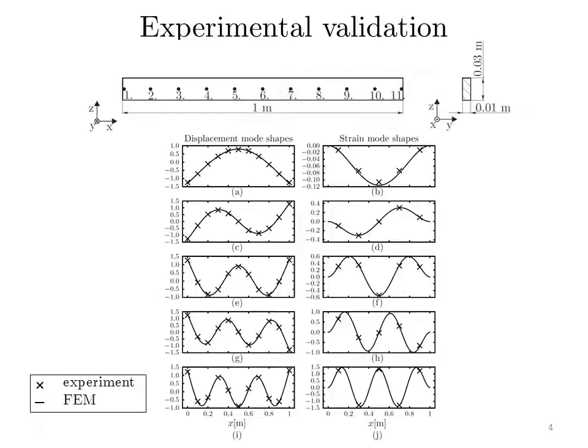The structure modification was performed by attaching magnets. For validation, the identified displacement and strain mode shapes are plotted together with the shapes calculated using the finite element method. Figures A, C, E, G, and I show the displacement mode shapes. Figures B, D, F, H, and J show the strain mode shapes. The comparison shows that the experimental results are in good agreement with the calculated values, which demonstrates the validity of the proposed approach.